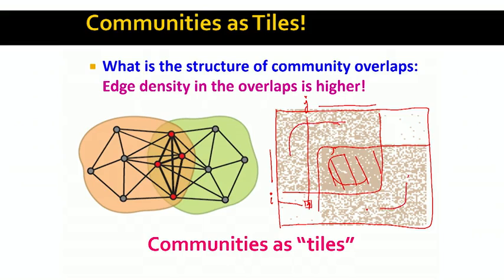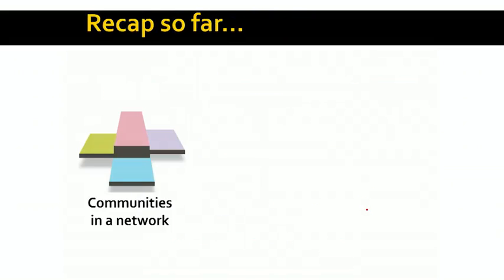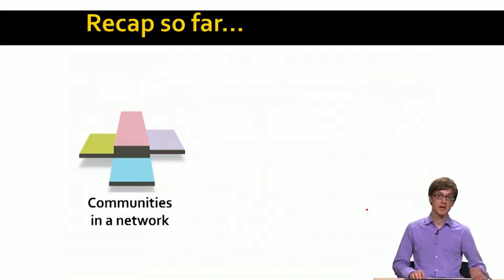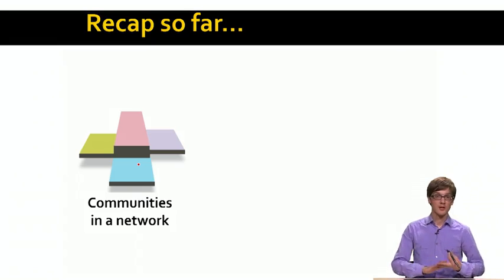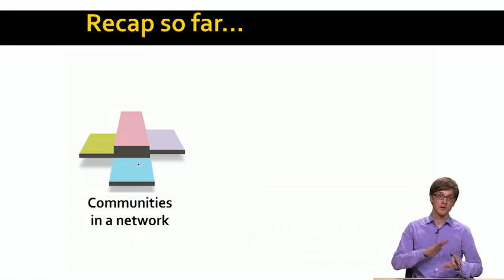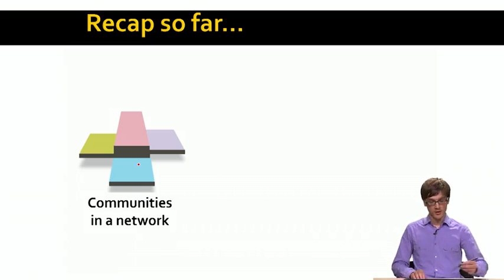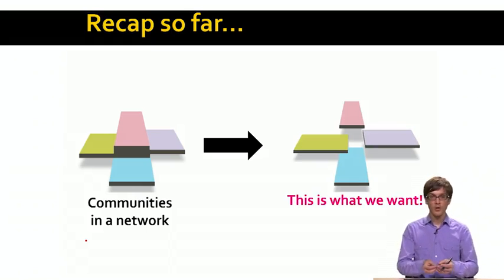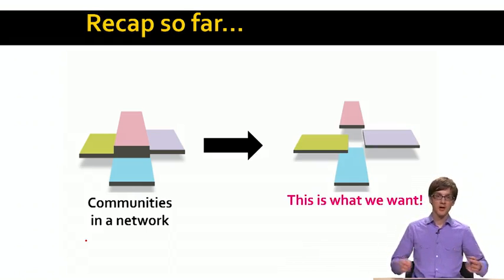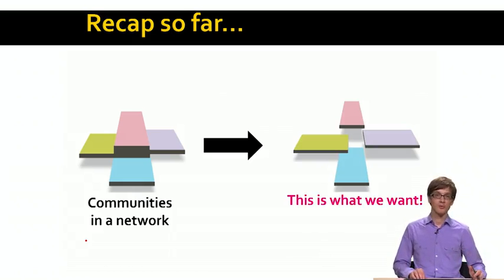So the idea is that we can think of communities or clusters in networks as tiles, where the more groups overlap in a certain region, the thicker the tiles and the more edges there are in the network. What we would like to do is, using this view of the network, go and basically take out these tiles one by one from the network. That's what we want to do.